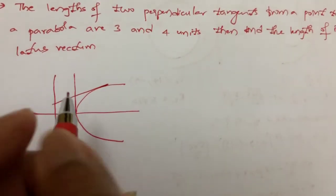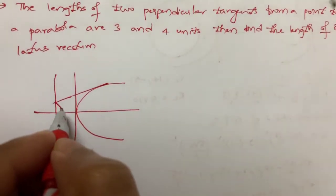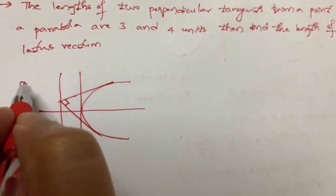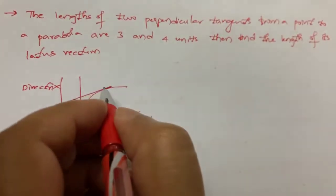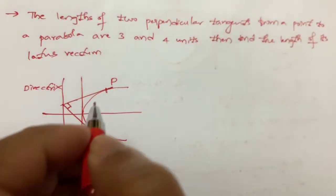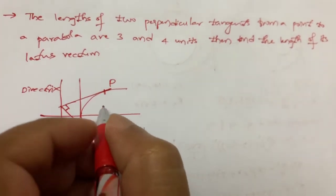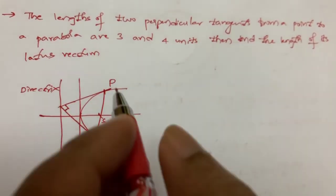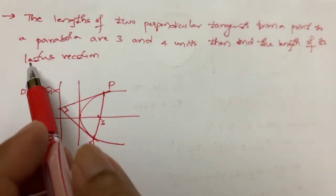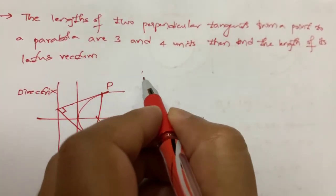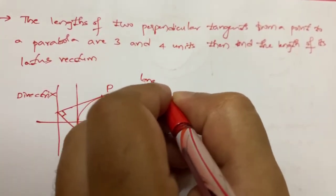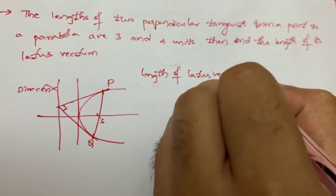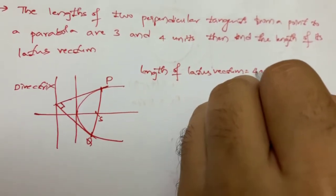If I draw a tangent and from the same point draw another tangent, these two tangents are perpendicular and this is the directrix. I want to find the length of the latus rectum. The length of the latus rectum is clearly 4a, so length of the latus rectum equals 4a.